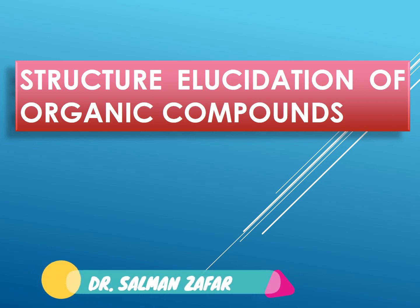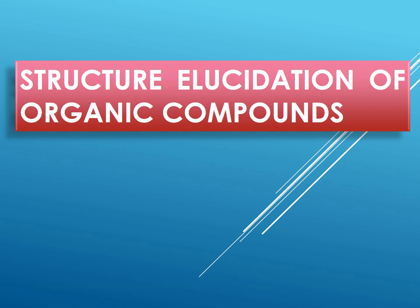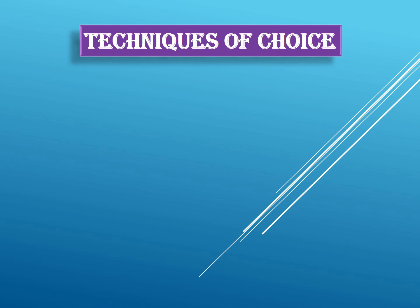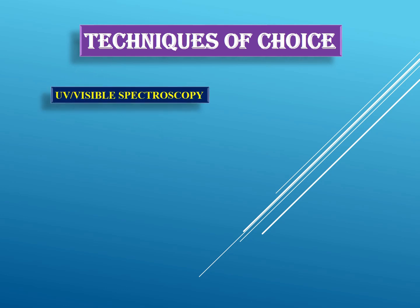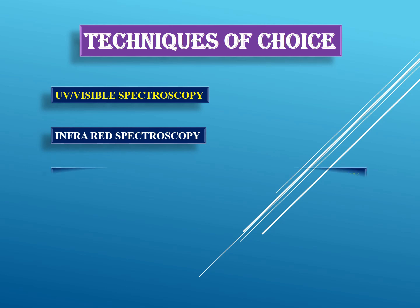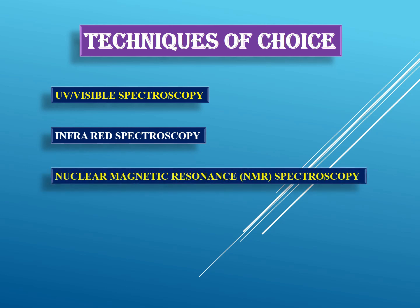Hello everyone, today I'm going to tell you about how to determine the structure of a compound, especially an organic compound. First of all, you need to know what are the techniques of choice for structure determination of any organic compound. The very first technique is UV-visible spectroscopy, infrared spectroscopy, nuclear magnetic resonance or NMR spectroscopy, and mass spectrometry.